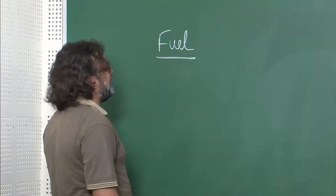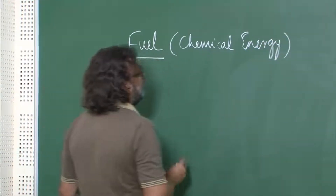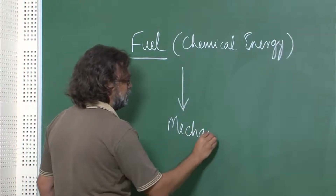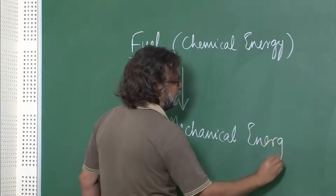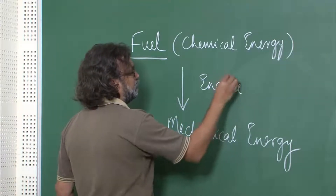If you have to design an engine, you require some abstraction. Therefore we will resort to basic thermodynamic processes, because essentially an IC engine is an energy conversion device which converts the chemical energy of the fuel — so you have essentially a fuel with chemical energy inside — and this is converted to mechanical energy with the help of the IC engine.